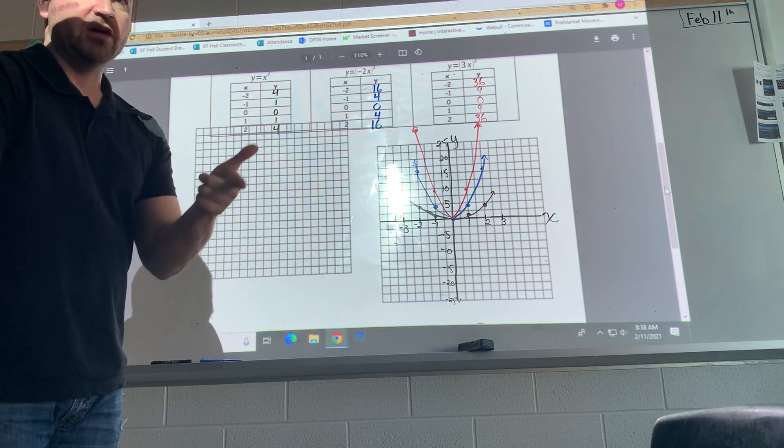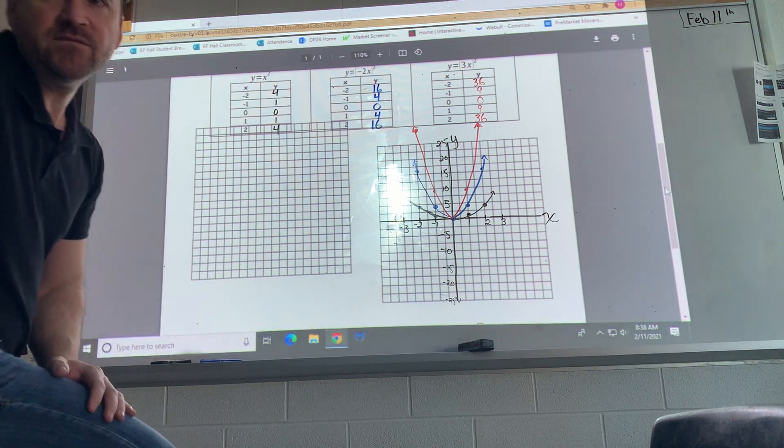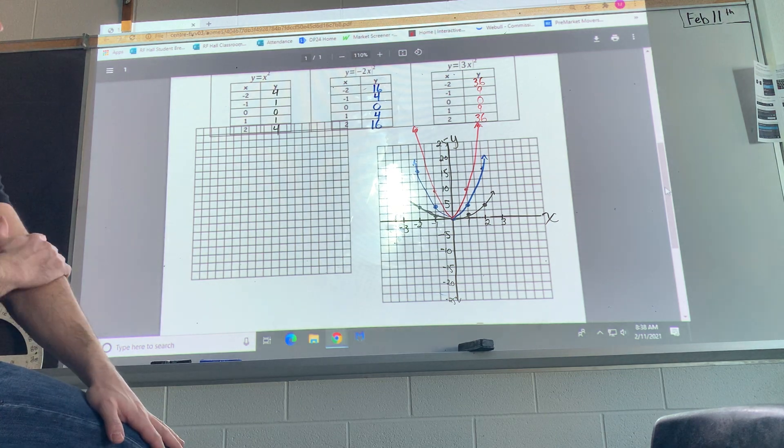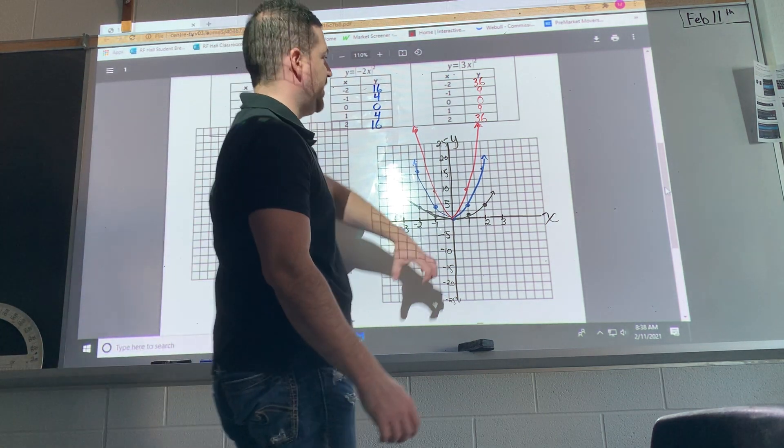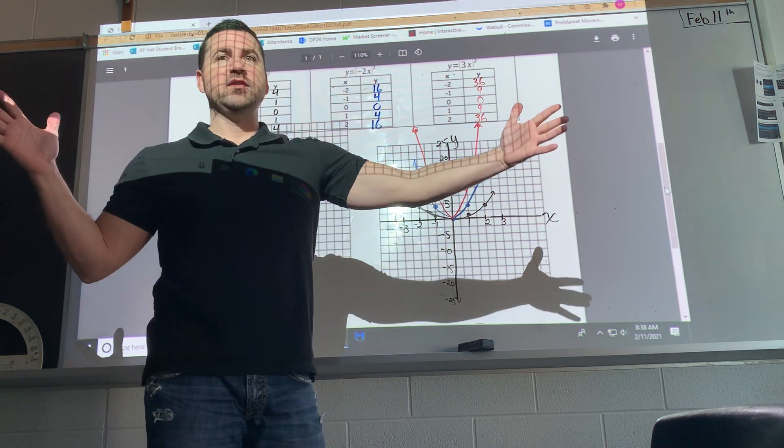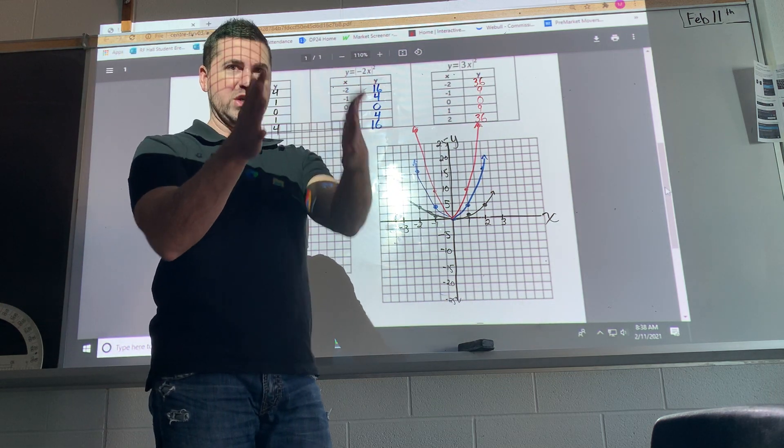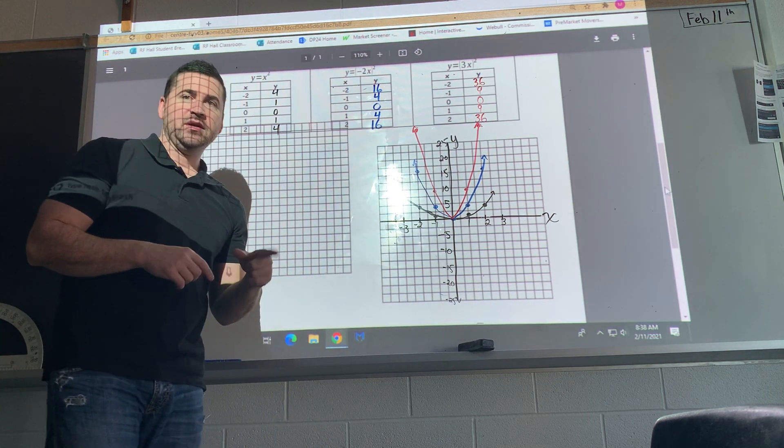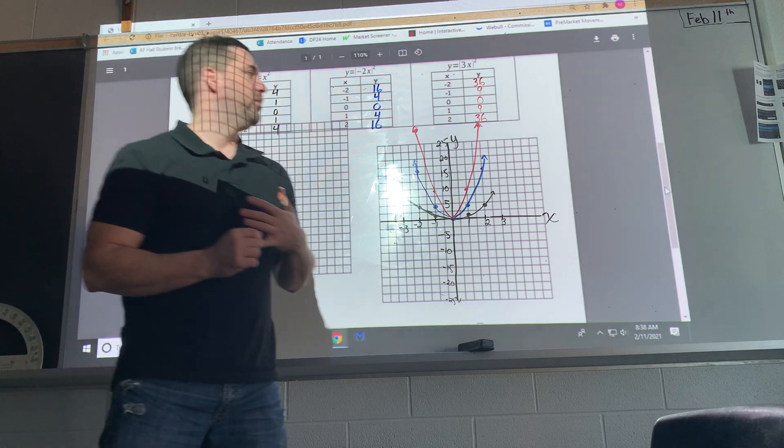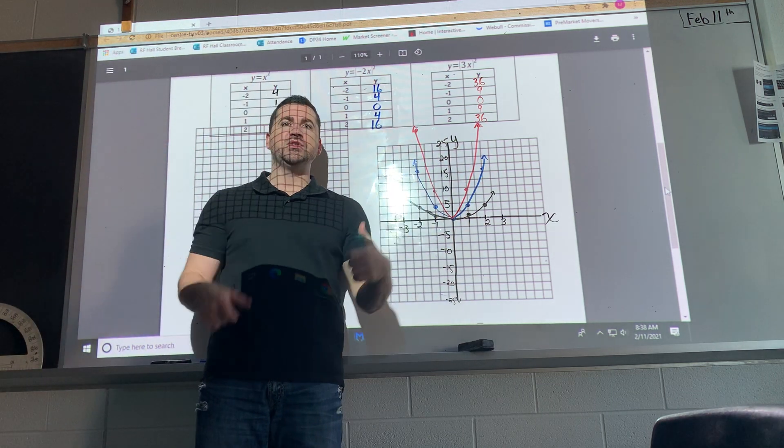So it's the opposite of the a value. So the a value would be a stretch, and then the horizontal, the k value, is a compression. It looks the same and it does the same thing, but when we're talking about vertical and horizontal, it's just different.